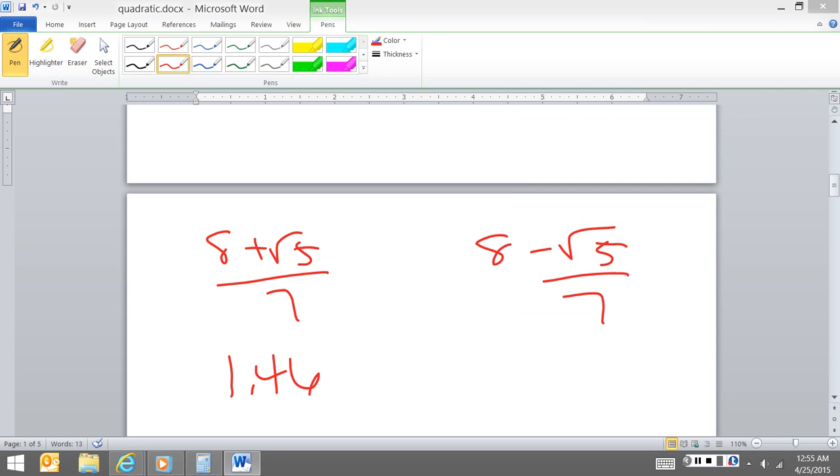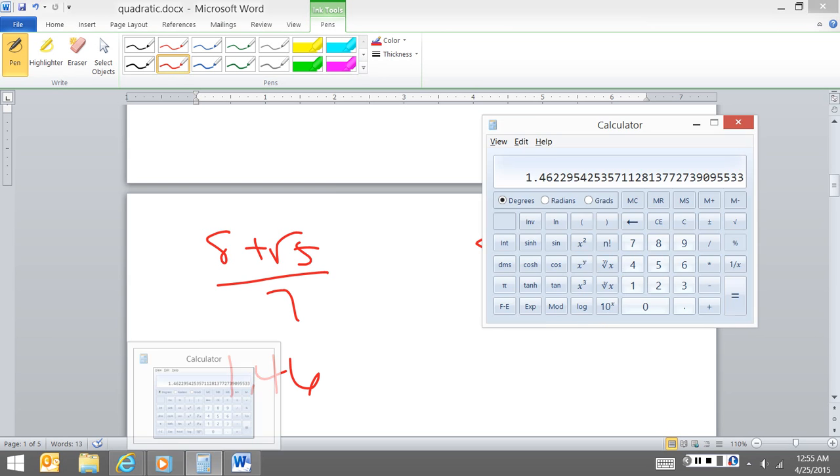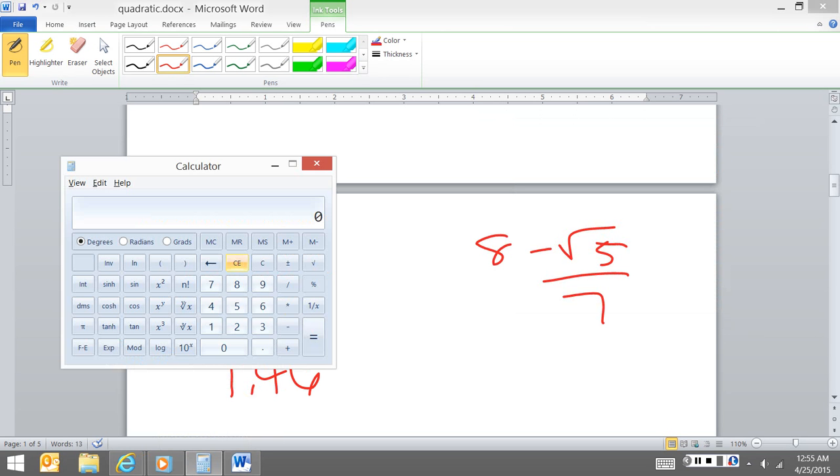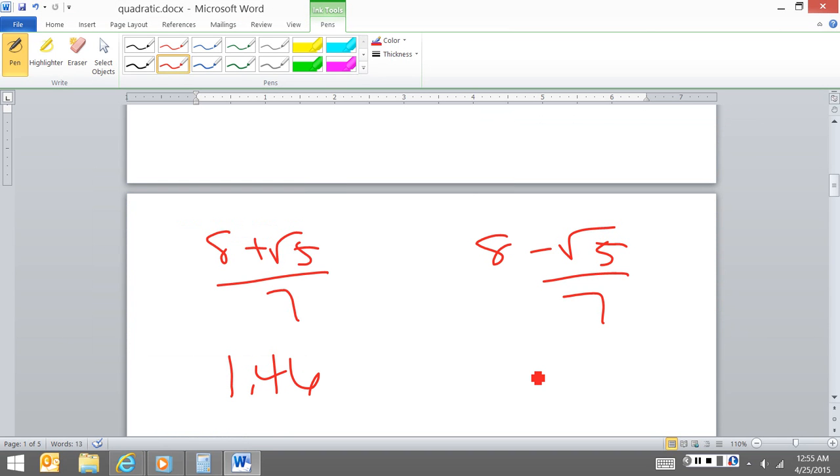Now, here, order does matter. So I'm going to do 8 minus 5 square root, okay, divided by 7. And this is 0.82. My two exact answers.